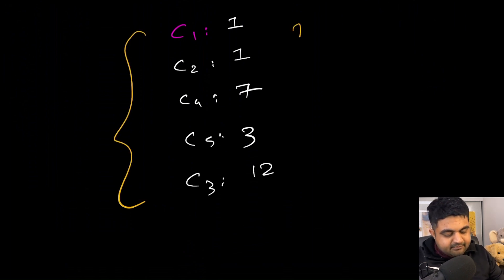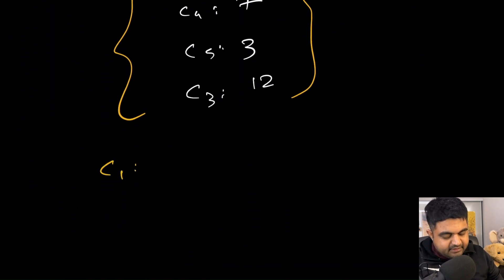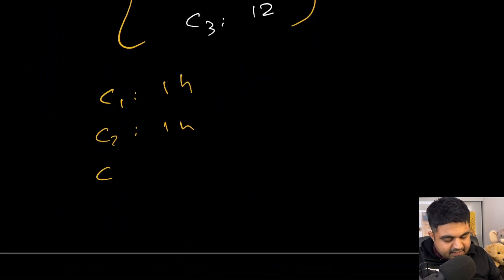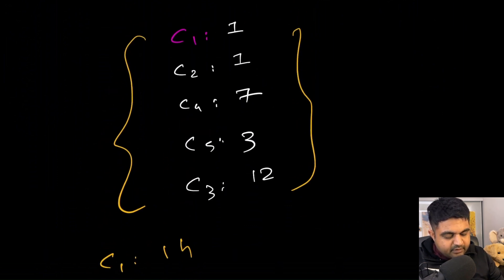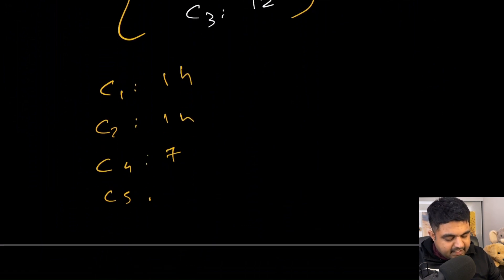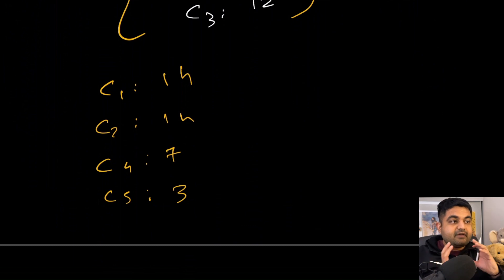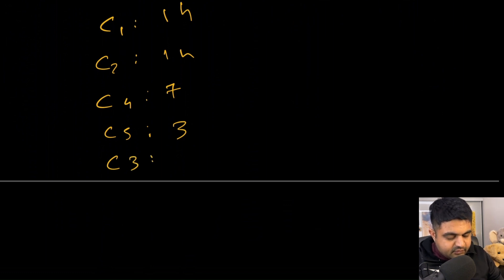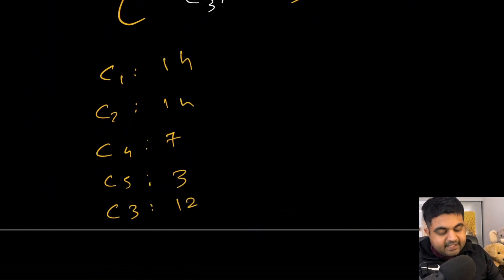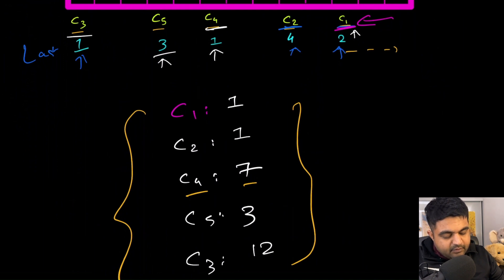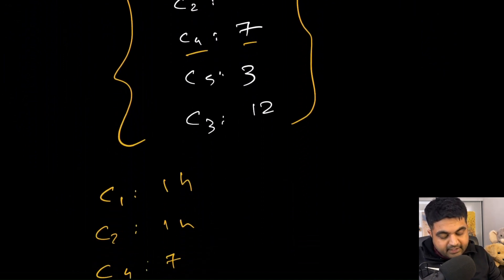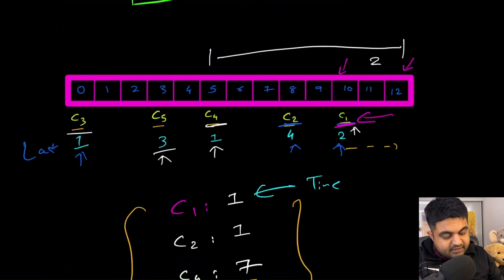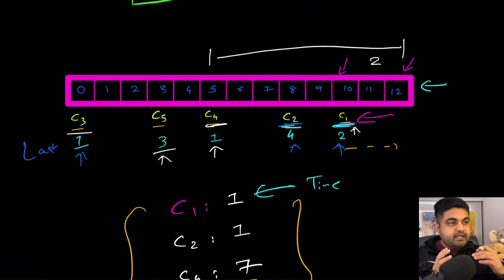Now we have this list ready. Let's sort it based on the position of the cars. C1 and C2 are already in the correct positions — both with a time of one hour. Then we have C4 with seven hours and C5 with three hours. And the last one is C3, which is going to take 12 hours to reach the destination. So to recap: we found out how much time it takes for each car to reach the destination, then we sorted all of these cars based on position relative to the target — the higher the position, the earlier it appears in our list — and we store this in a 2D array.